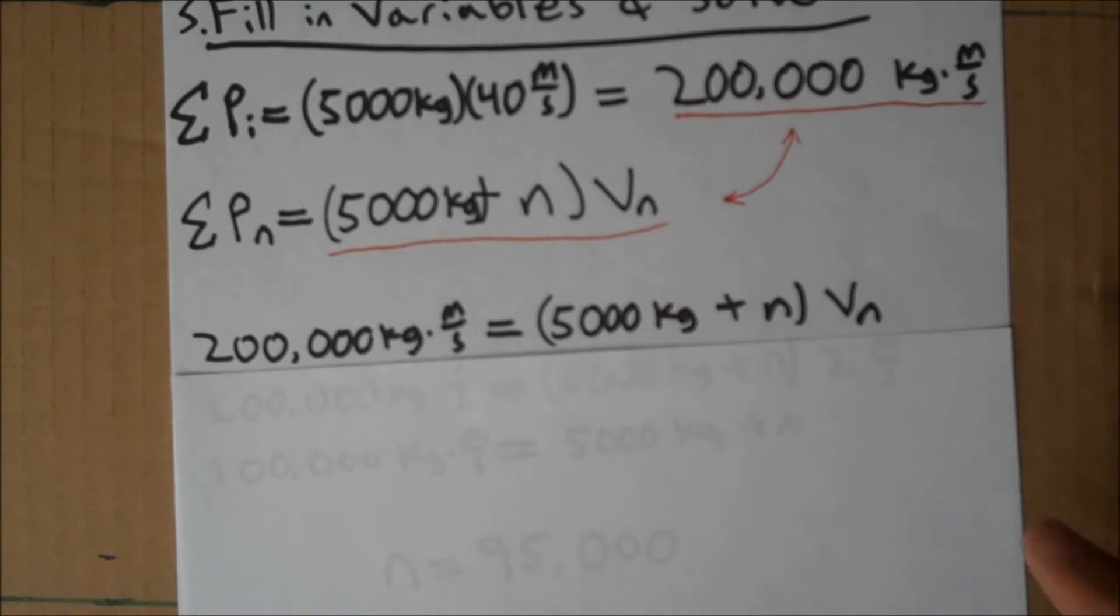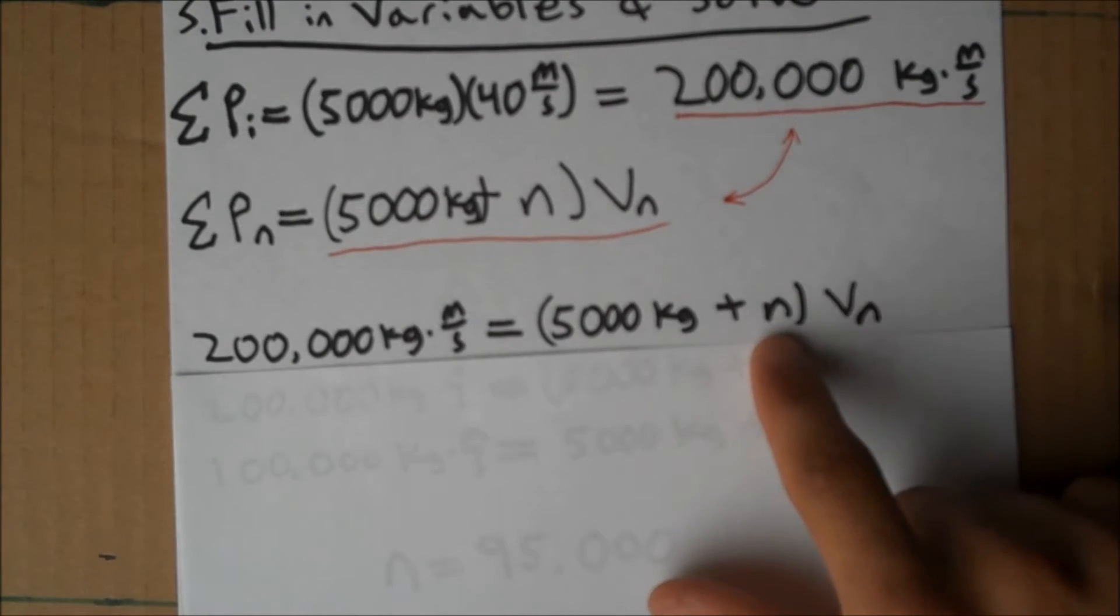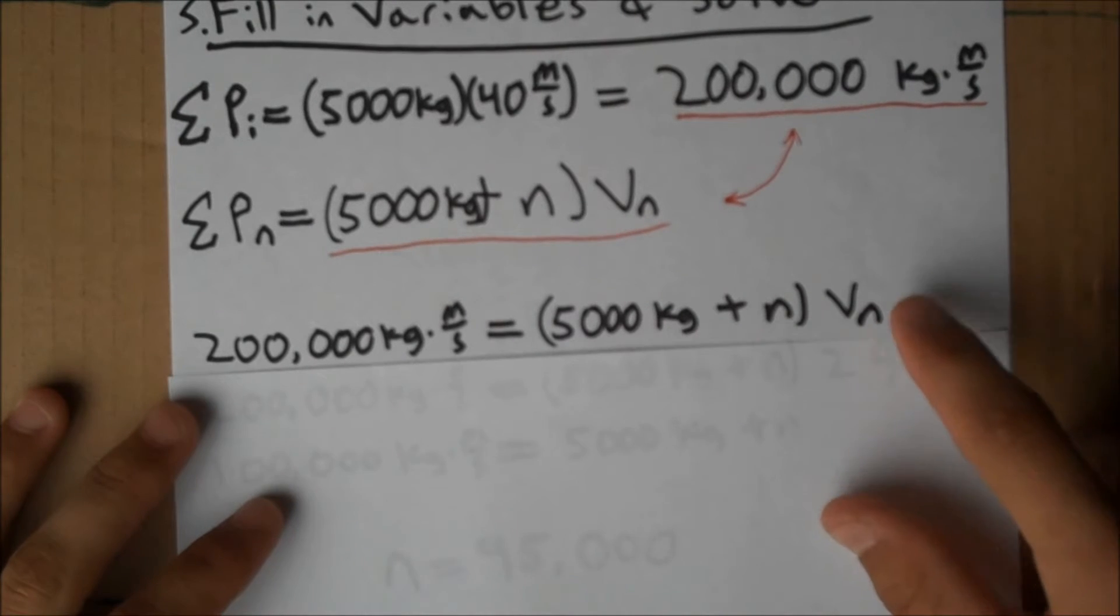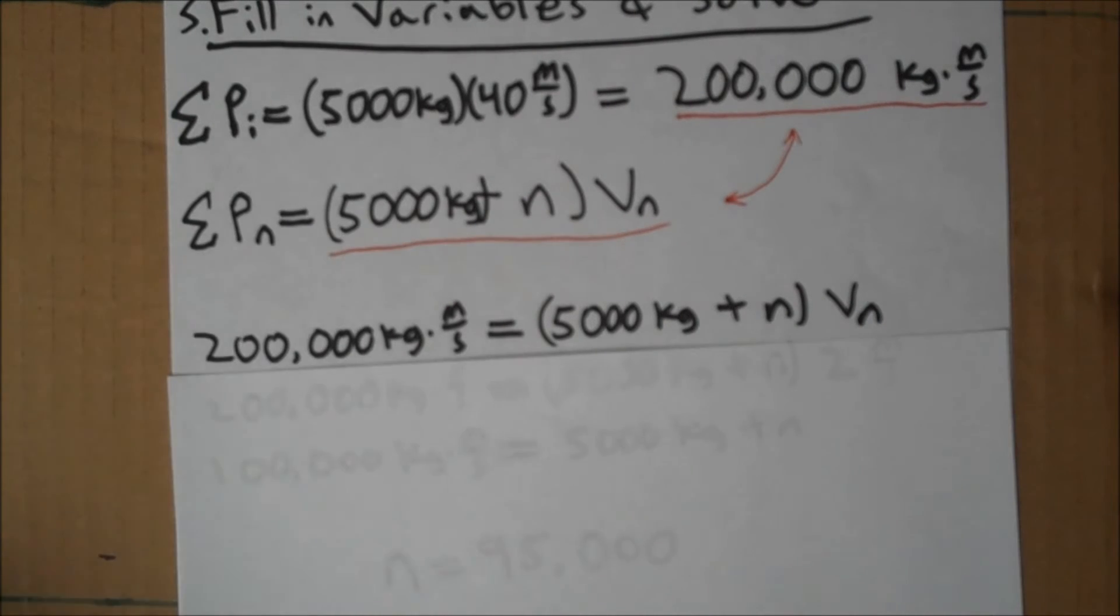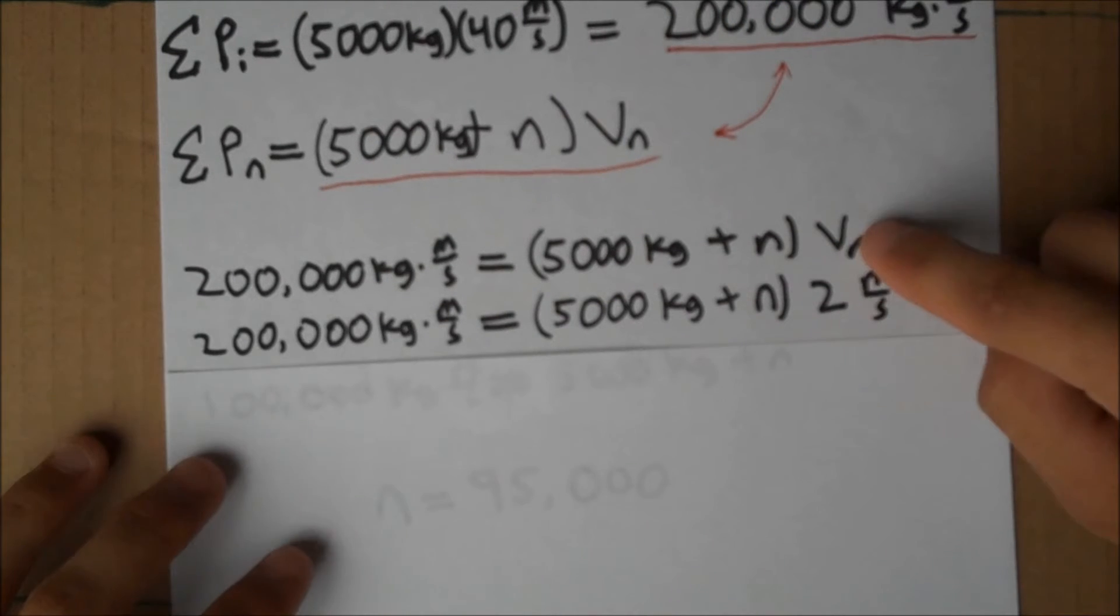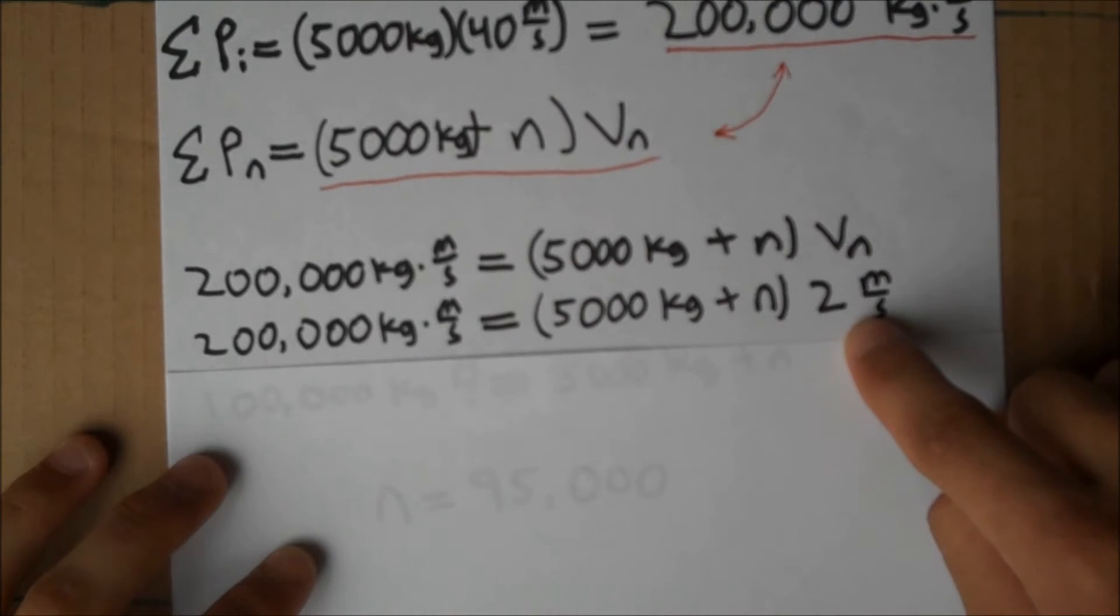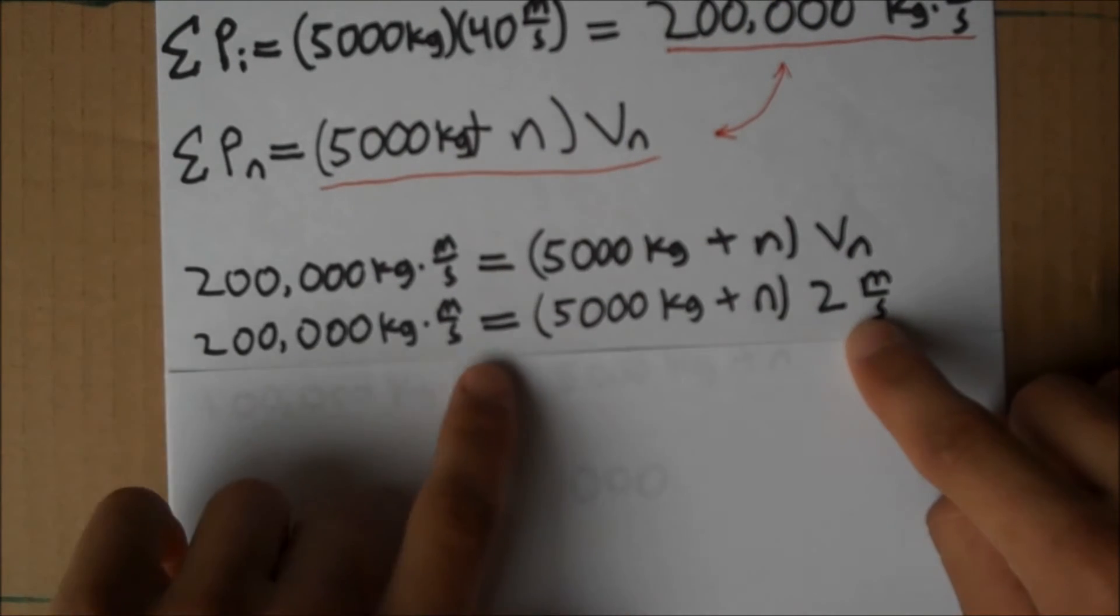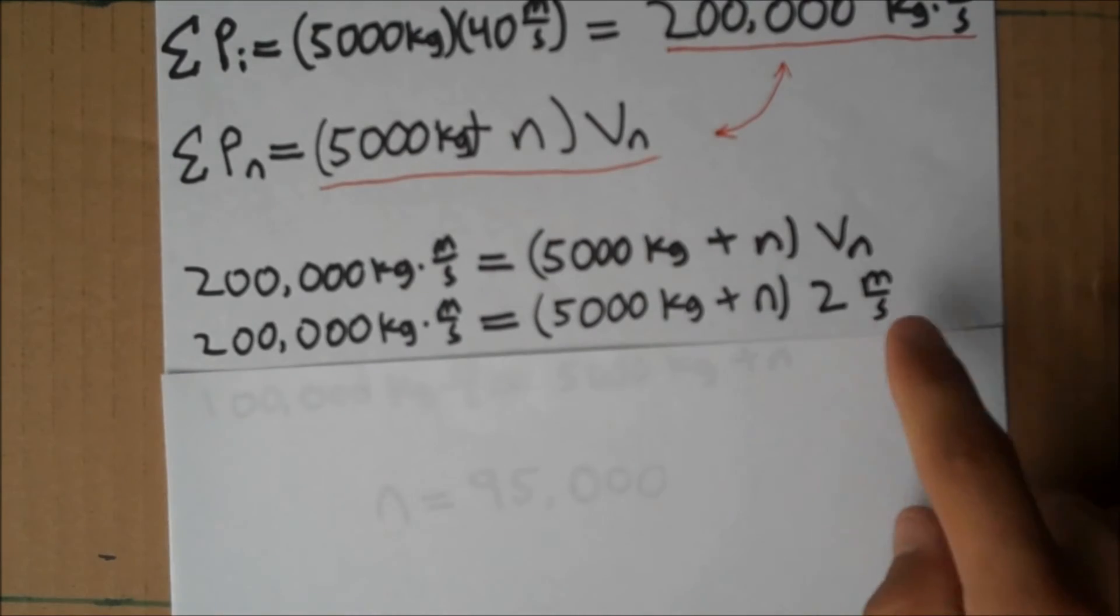Now, what we're looking for is what n has to be when v sub n, the velocity after the n-th collision, is 2 meters per second. We want to know when v sub n is 2 meters per second because, at that point, he can pull the brake. So, let's substitute that in. v sub n should be 2. 200,000 equals 5,000 plus n times 2.